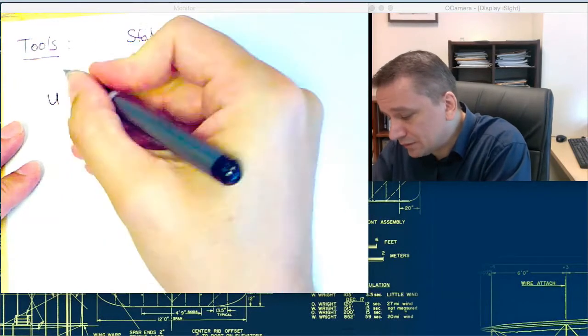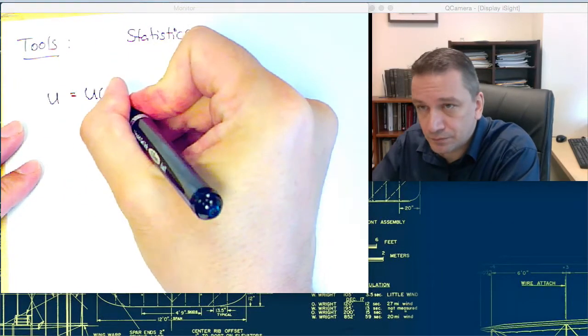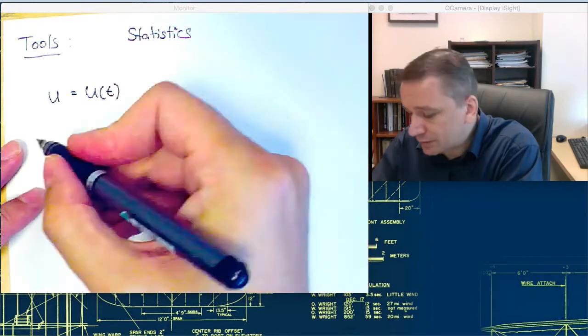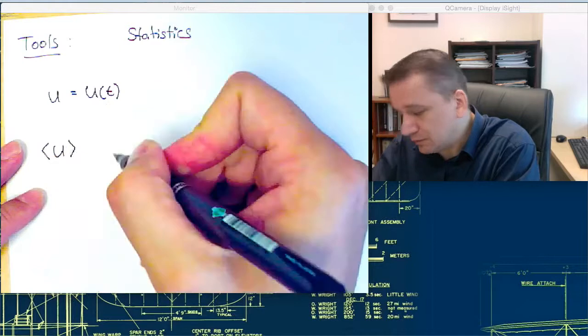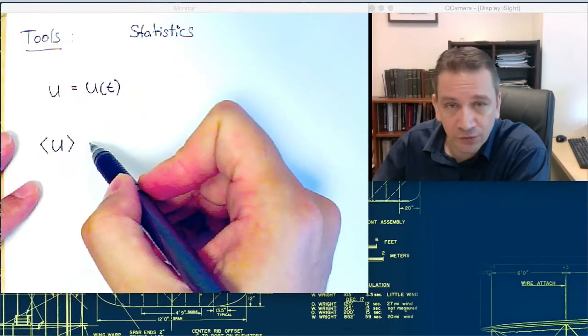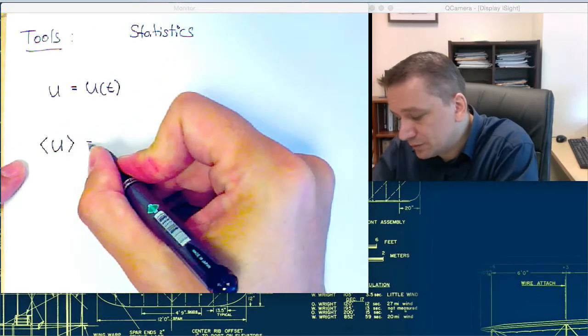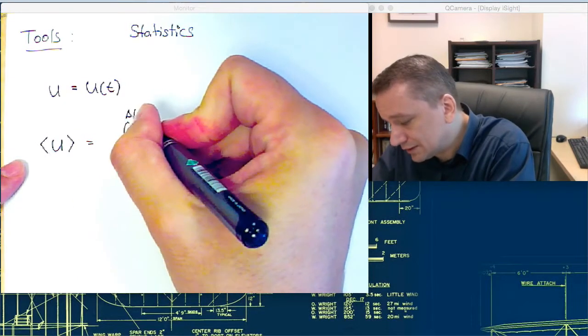The first obvious one is to use the time average rather than instantaneous values. So if you have a value of u, which is a function of time, we can introduce a time average. We're using the notation of Stephen Pope from our textbook.